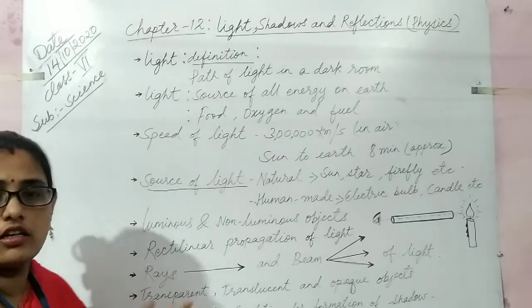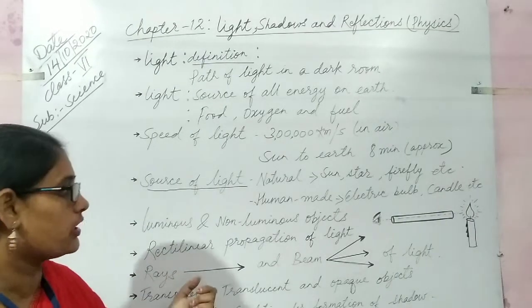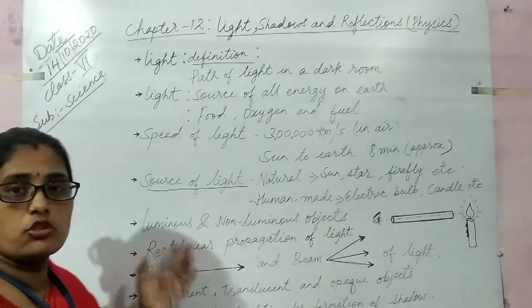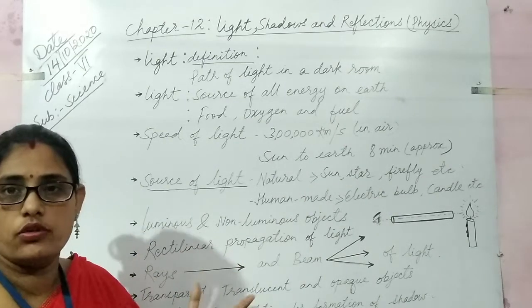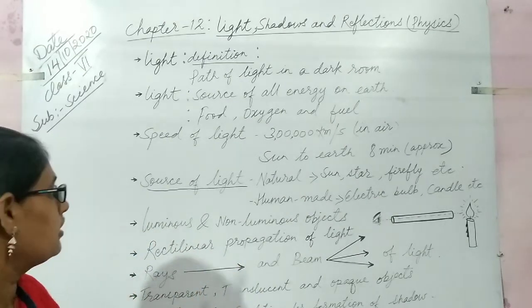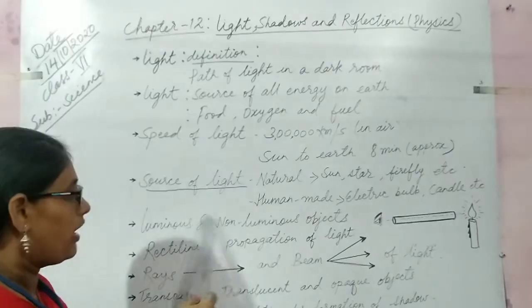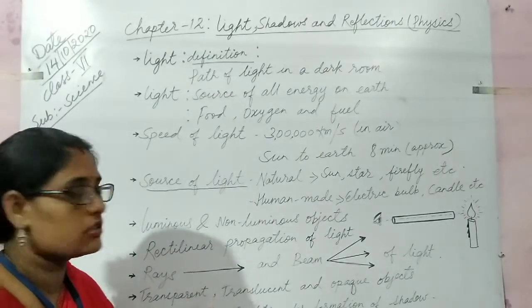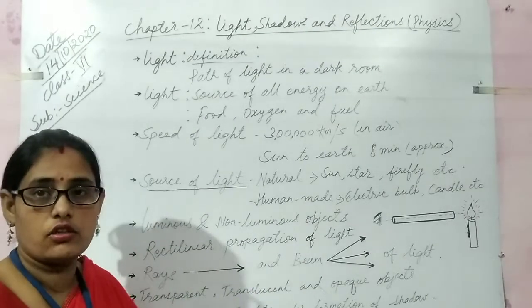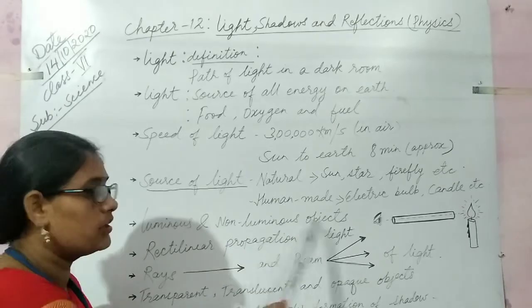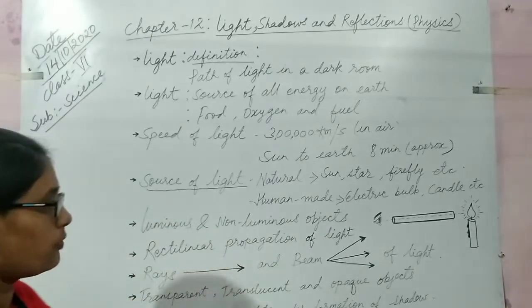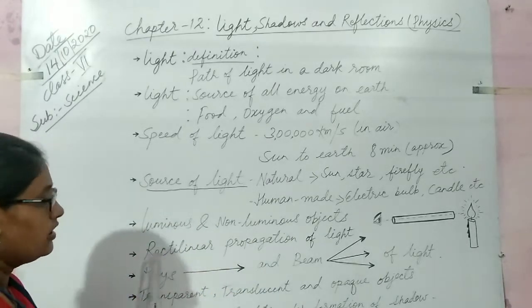Luminous and non-luminous objects. Those objects which emit their own light are known as luminous objects. And those objects which do not emit their own light are known as non-luminous objects.